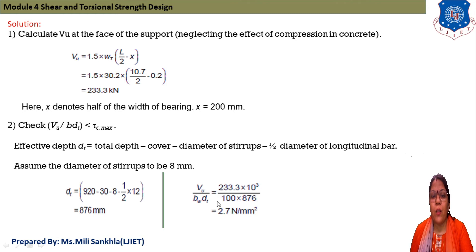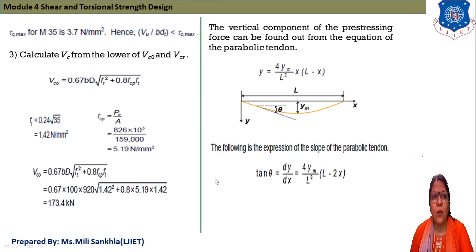This is the face of support shear force. Now check Vu/(bw·dt) is less than τc max or not. Effective depth is total depth minus cover minus diameter of stirrups minus half of diameter of longitudinal bar. Assume diameter of stirrups 8 mm. Now dt equals total depth 490 minus 30 minus 8 minus 0.5 × 12, we get dt 876 mm.